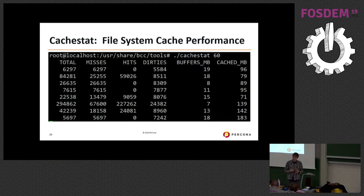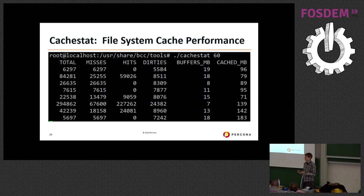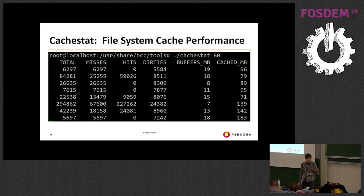Linux has a disk cache, but how efficient is it really? How do you know if you have a good hit rate? With eBPF, the cachestat tool shows how many total requests were read from cache, how many hits and misses, how many blocks were dirtied, and so on. This can really help you understand your cache performance.